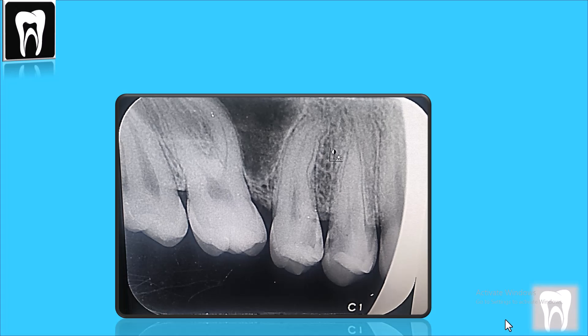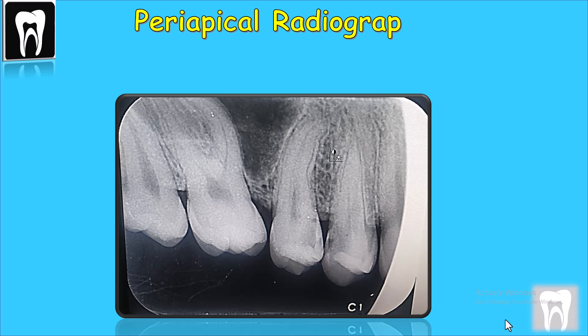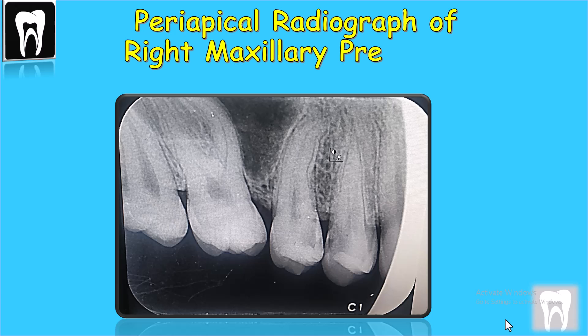This is a periapical radiograph of the right maxillary premolars. We can see the canine, the first and second premolar, and a part of the first molar.